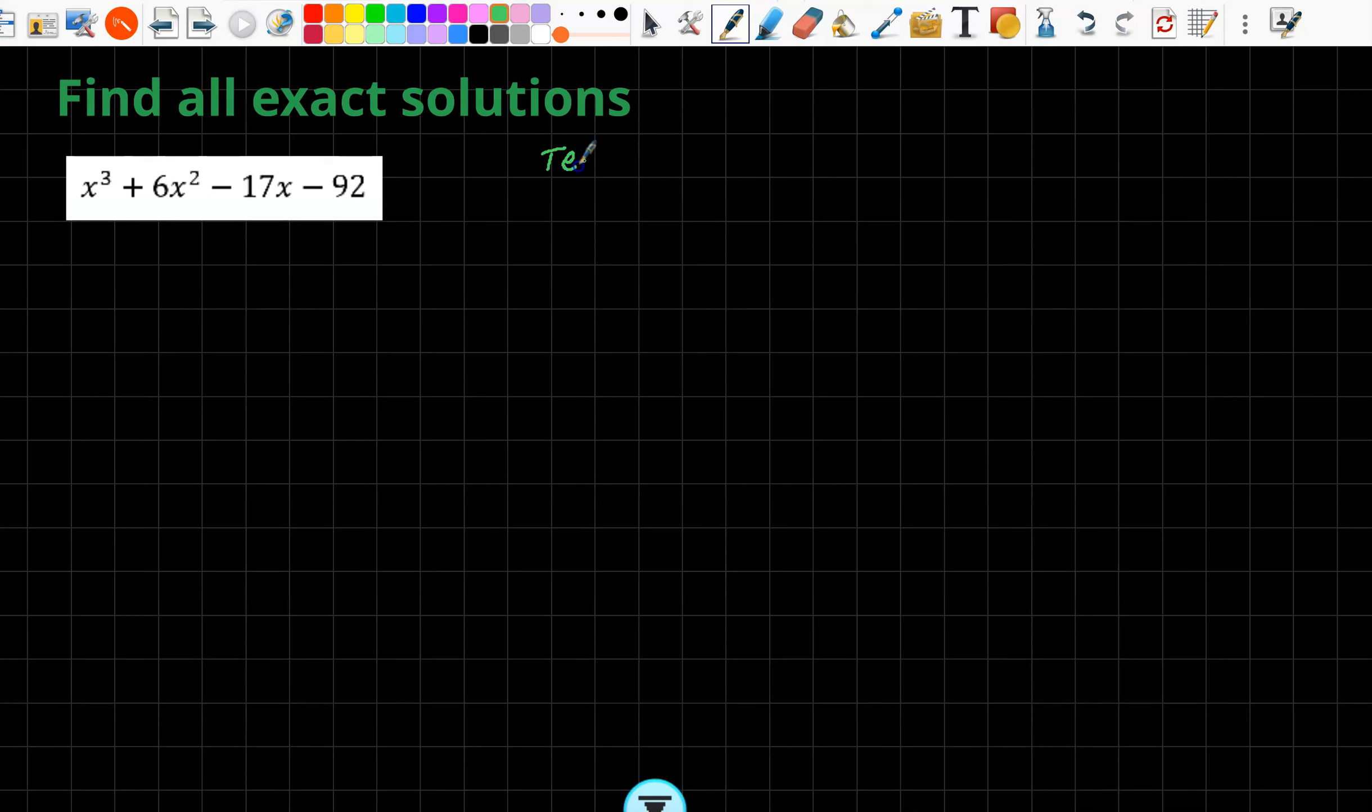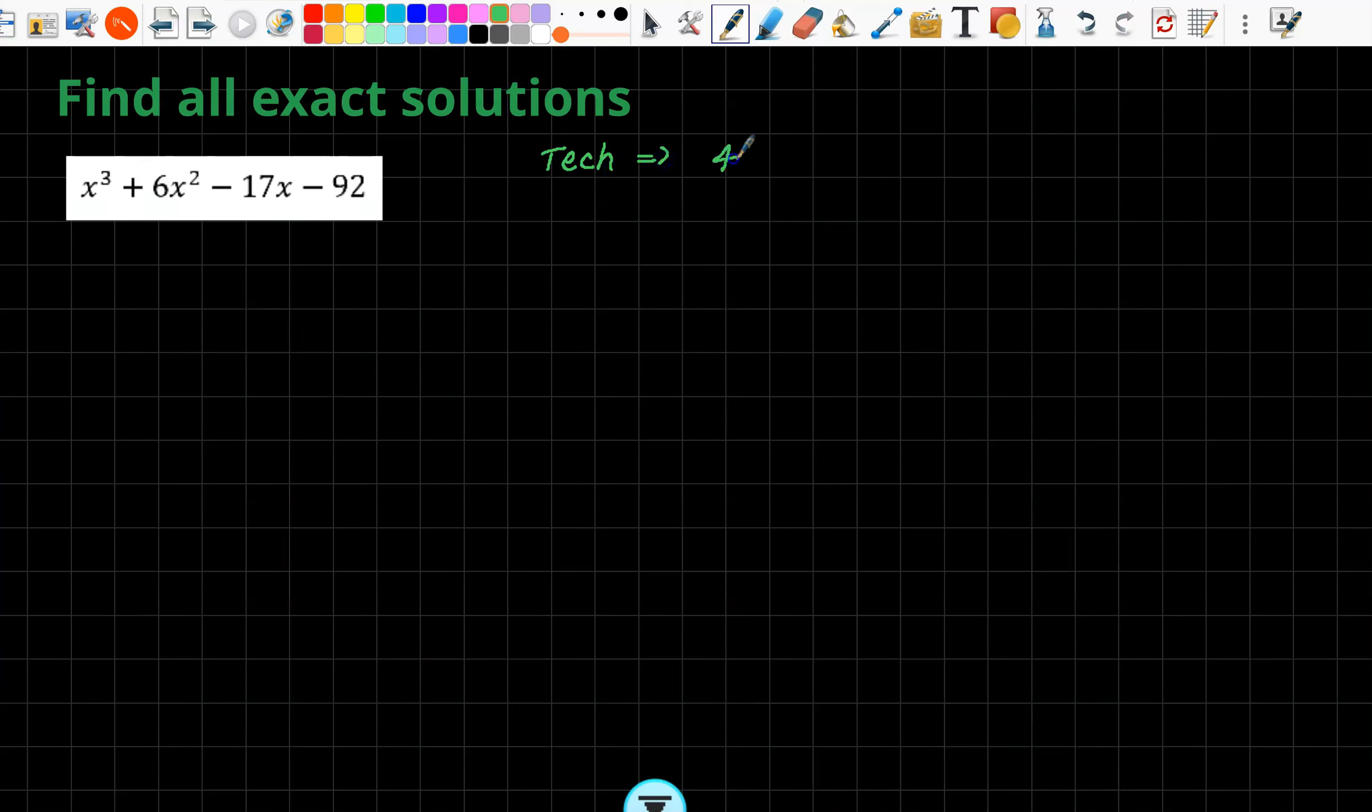1 enter, 6 enter, minus 17, and minus 92. We press solve. Now, those are useless, decimals. But what this is saying is that 4 is a solution. So using technology, we have 4 is a solution. That gives me that x take 4 must be a factor. So now we can rewrite this. We can say that this must equal x take 4 times another quadratic to end up getting our cubic.